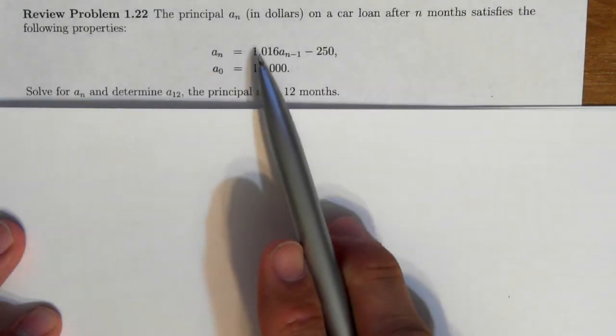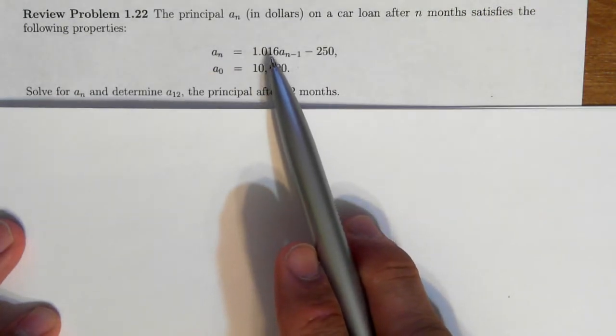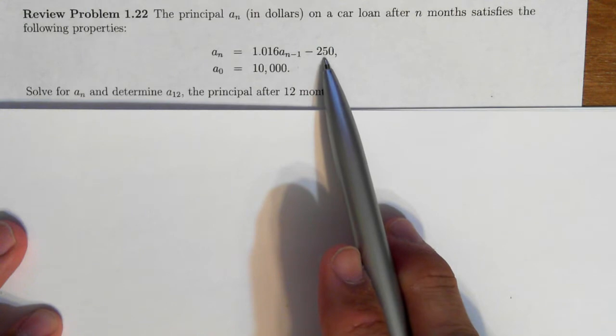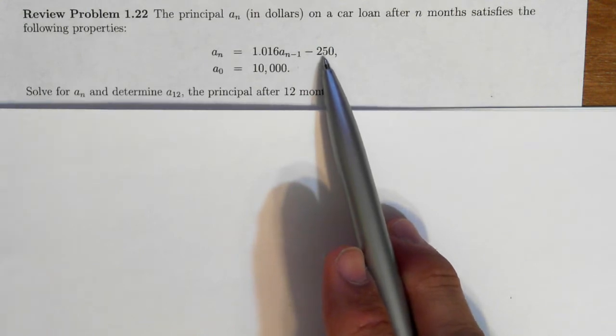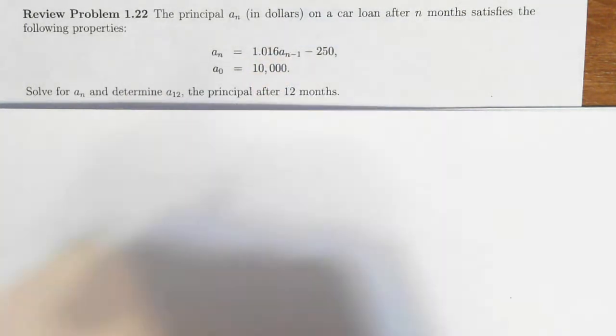The interest rate per month is 1.6%. That sounds like a good deal, but that's the interest rate per month as opposed to per year. And we're going to pay $250 a month on the car loan. So let's do this and let's see what the principal will be after 12 months.